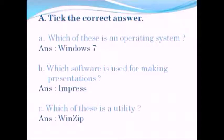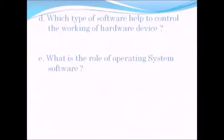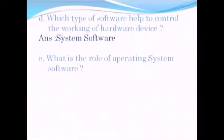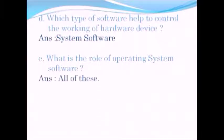Next, which type of software helps to control the working of a hardware device? The answer is system software — it helps to control the working of hardware devices. Next, what is the role of operating system software? The answer is all of these, since it performs many roles: managing system memory, helping to store files, and assigning jobs to the CPU.